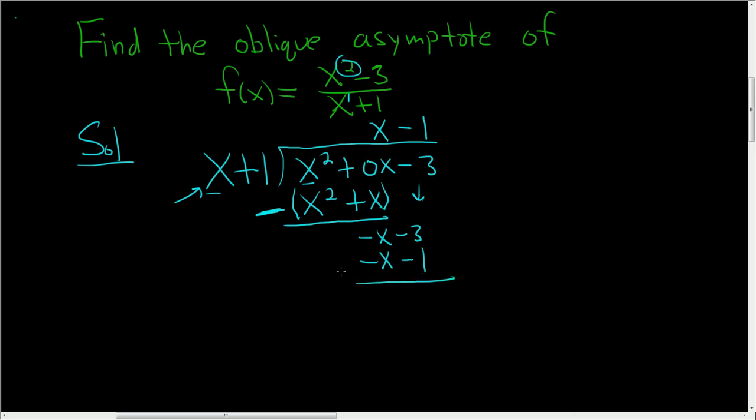Draw the line, put a giant parentheses, giant minus sign, and parentheses. Add negative x plus x is 0. Negative 3 plus 1 is negative 2.